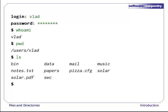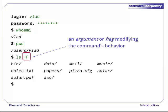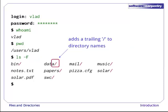ls prints the names of all the files and directories in the current directory, in alphabetical order, arranged neatly into columns. To make its output more comprehensible, we can give it the argument or flag dash f. This tells ls to add a trailing slash to the names of directories.